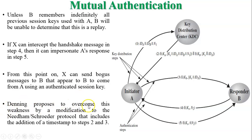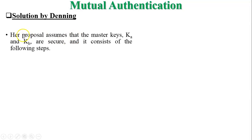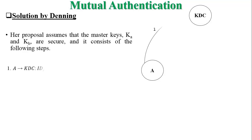Denning proposed to overcome this weakness by modifying the Needham-Schroeder protocol to include the addition of timestamps in step two and step three, in order to avoid this kind of replay attack. Her proposal assumes that master keys KA and KB are secure.